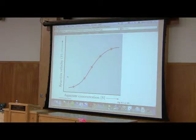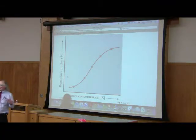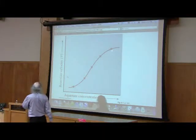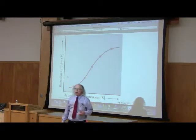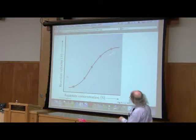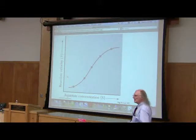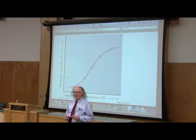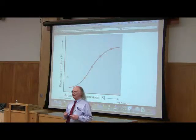ATCase exhibits allosterism because we see that its reaction rate changes as a function of its substrate concentration. This turns out to be really, really useful because it turns out that there are some things in our body that will turn ATCase off and keep it way down here, and other things in our body that will turn ATCase on and put it way up there.